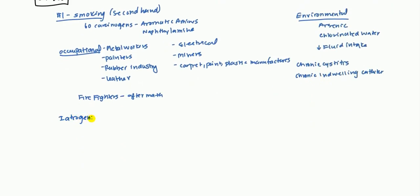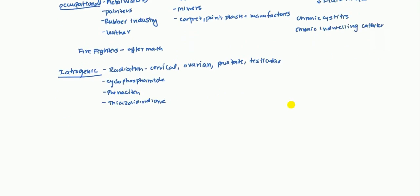Finally, there are some iatrogenic causes, so causes by doctors. First is going to be radiation. So exposure to radiation usually due to cervical cancer, ovarian cancer, prostate, and even testicular. So patients who have a history of radiation exposure due to these cancers are at risk. Cyclophosphamide, which is another anti-tumor drug, which causes hemorrhagic cystitis. Phenacetin, which is not given much anymore, as an analgesic is associated. And there is some evidence linking thiazolidinediones, which is a diabetic drug. So these are the overall causes. The underlying issue is either they're exposed to some carcinogens, or there's some type of chronic damage that's going on, or they get exposed to some drugs or radiation.